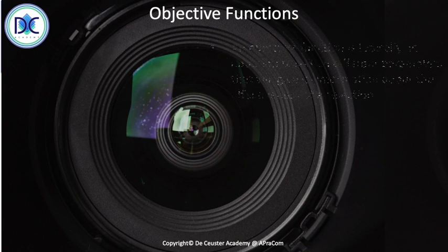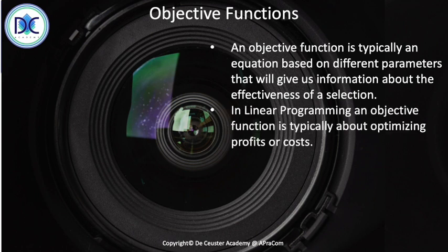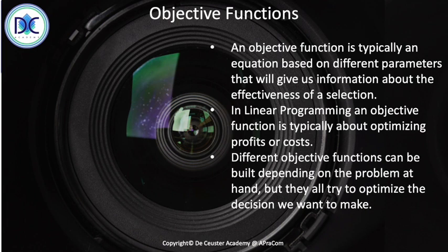An important element when making decisions is the objective function. It's typically an equation based on different parameters, and we look at the effectiveness of the selection we make. We try to find the best selection based on that equation and those parameters. In linear programming, we typically look at optimizing profits or costs — maximizing profits and minimizing costs. There are different objective functions and different optimization techniques that we will discuss further in the following videos and lectures.